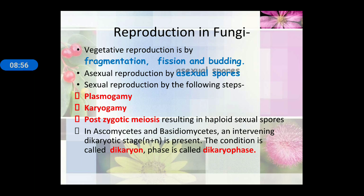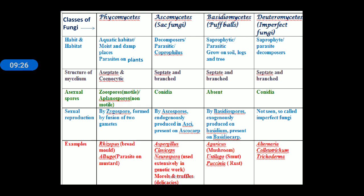Vegetative reproduction in fungi occurs by fragmentation, fission, and budding. Asexual reproduction occurs by asexual spores, and sexual reproduction occurs by plasmogamy and karyogamy. In plasmogamy there is fusion of protoplasm of two gametes; in karyogamy the fusion of nuclei takes place. Post-zygotic meiosis results in formation of haploid sexual spores. The classes of fungi are: phycomycetes, ascomycetes, basidiomycetes, and deuteromycetes.